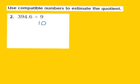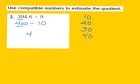Now I'll look at my dividend of 394 and 6 tenths. To find a compatible number that works well with 10, I'll list multiples of 10: 10, 20, 30, and 40. The first two digits, 39, fall in between 30 and 40, and 39 is closest to 40. So I'll turn 394 and 6 tenths into 400, divide by 10, and my estimated answer is about 40.